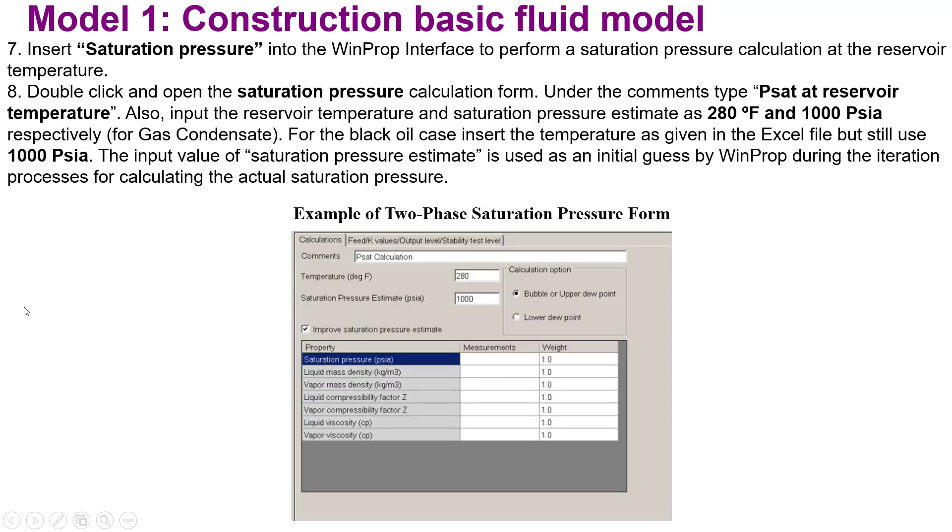Next step: insert the saturation pressure into the WinProp interface to perform saturation pressure calculation at the reservoir temperature. Duplicate the two-phase flash calculation form. Under the comment, type 'Psat at reservoir temperature.' Also input the reservoir temperature and saturation pressure estimate at 280°F and 1000 psia for gas condensate properties.